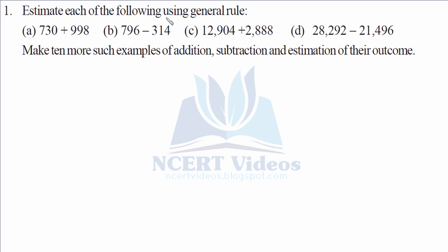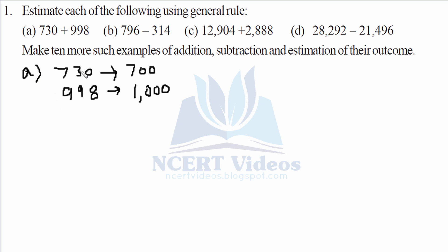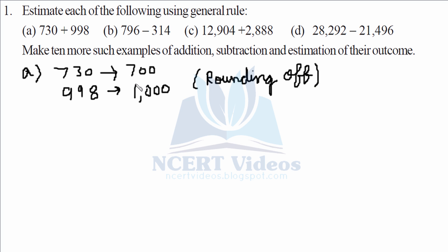We will estimate each of the following using the general rule. The general rule is to round off to the maximum digits. So for part A, 730 is converted to 700 and 998 is converted to 1000, because it is nearest to 1000 — only two numbers apart. Based on this general rule, 1000 plus 700 gives you 1700.